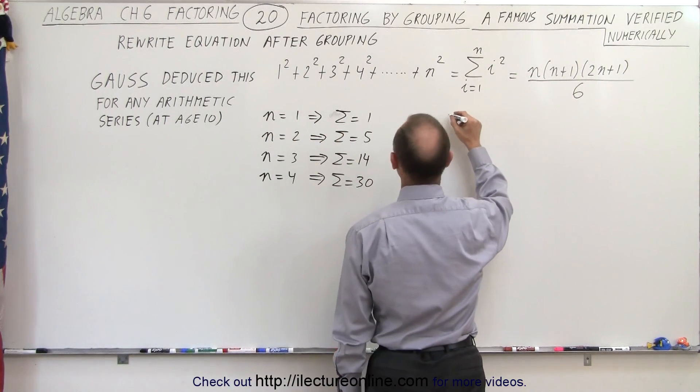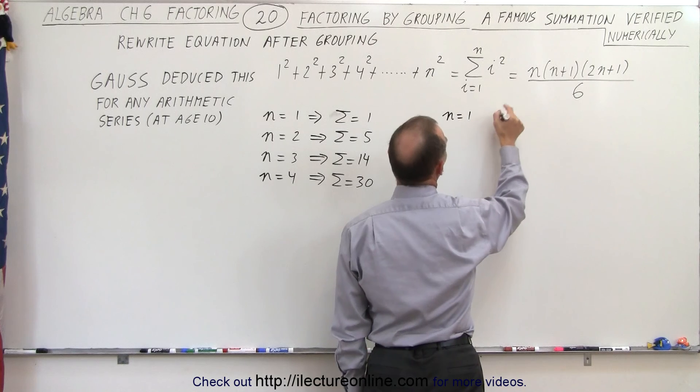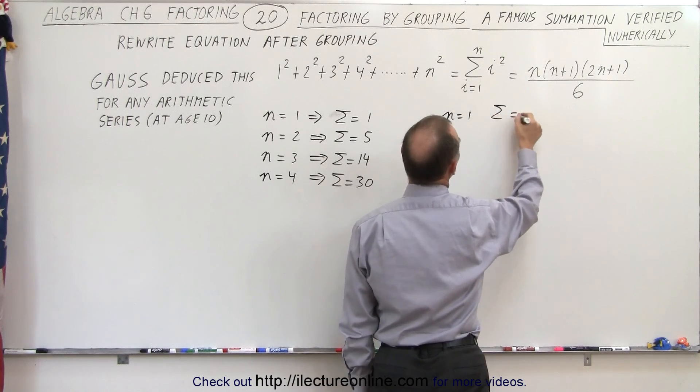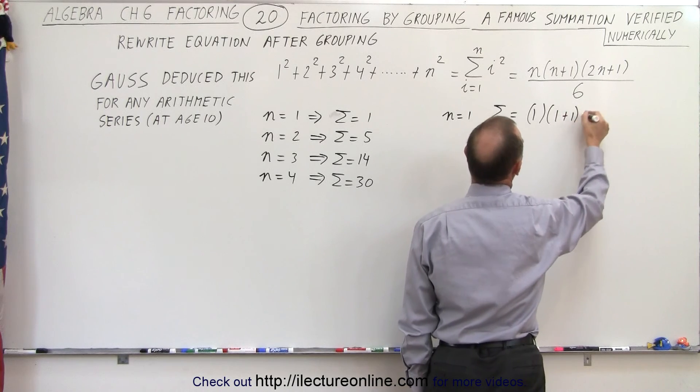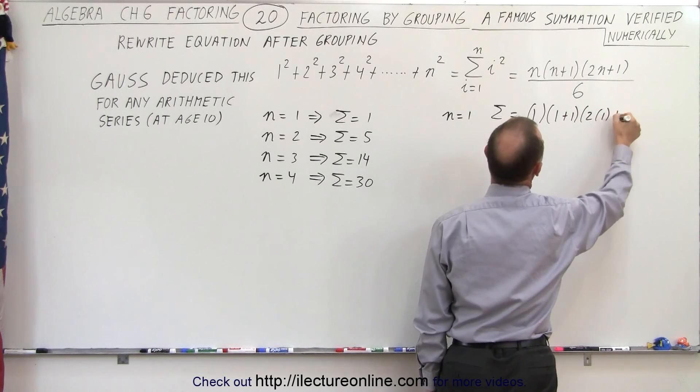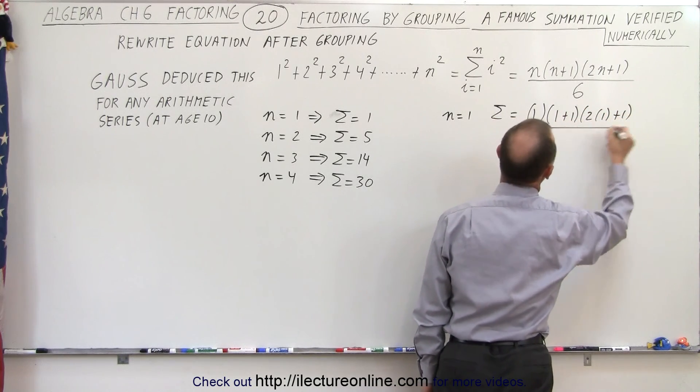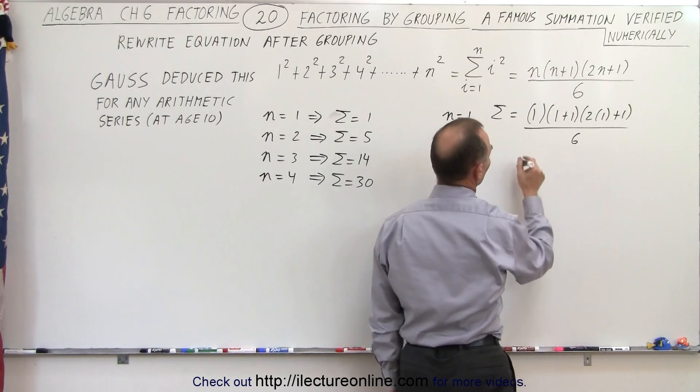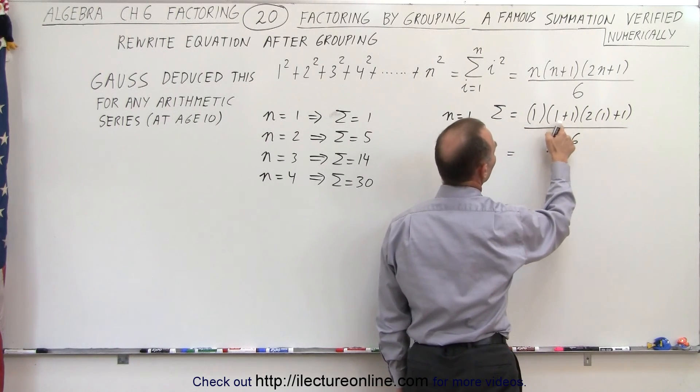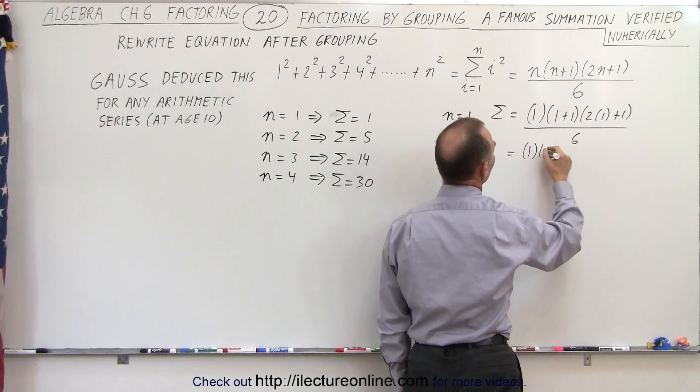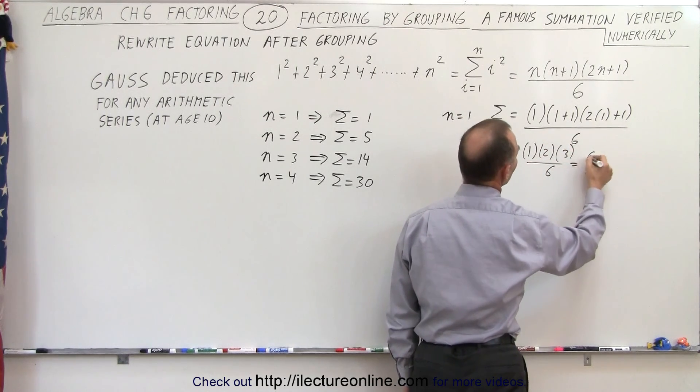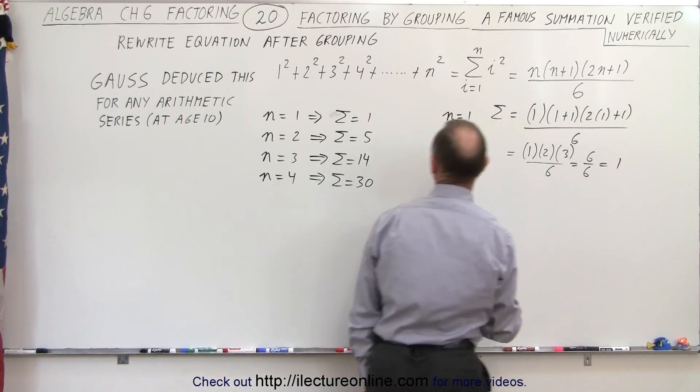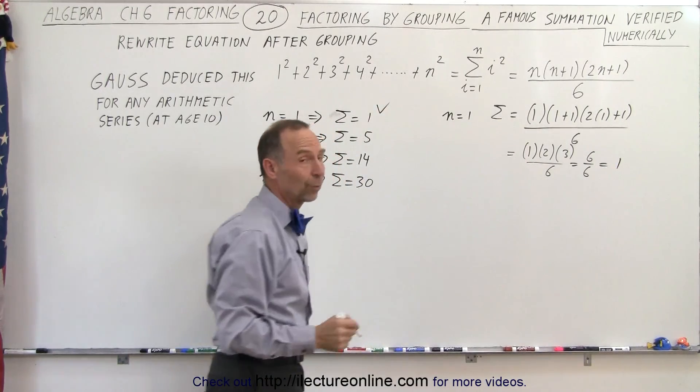So first of all when n equals 1, the summation equals 1 times (1+1) times (2×1+1) all multiplied together divided by 6. So that would be equal to 1 times 2 times 3 divided by 6, which is 6 divided by 6, which is indeed 1. So the first one seems to work out.